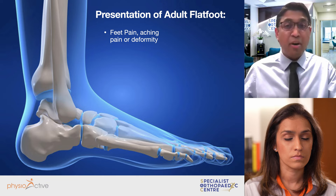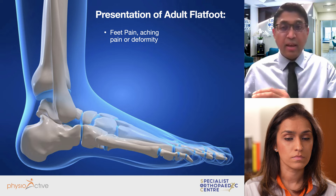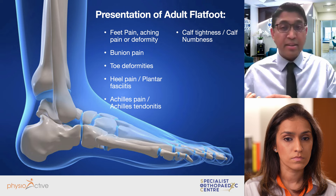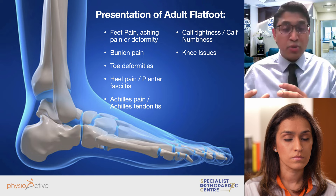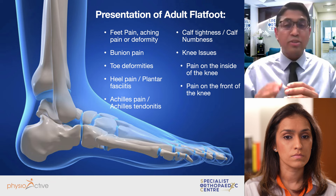In the adult, flat foot presents a little bit differently. The adult may present with foot pain, aching pain, or deformity. Important aspects include bunion pain, toe deformities, heel pain or plantar fasciitis, Achilles pain, calf tightness or numbness. Patients also present with knee issues — pain on the inside or front of the knee — because of the alignment of the heel or knee in relation to the flat foot. So it's about understanding the underlying presentation and examining accurately.